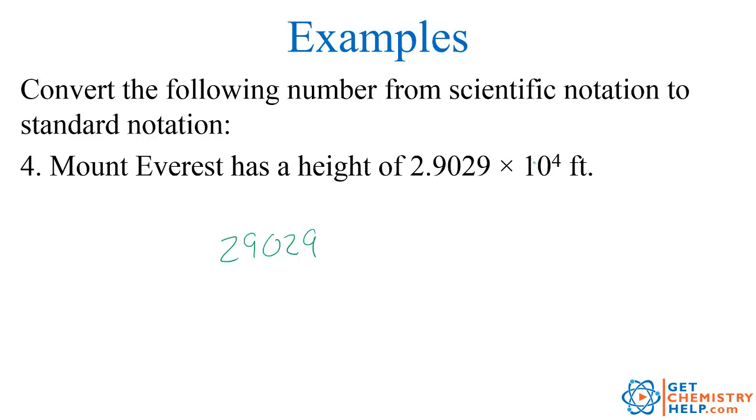The question is, is the decimal going to move to the left or the right? If I'm multiplying by 10 four times, the number's going to get bigger. It's going to get 10 times bigger than 100, then 1,000, then 10,000. So I've got to move it to the right 4 times. So it's going to go 1, 2, 3, 4. So it's basically 29,029 feet.